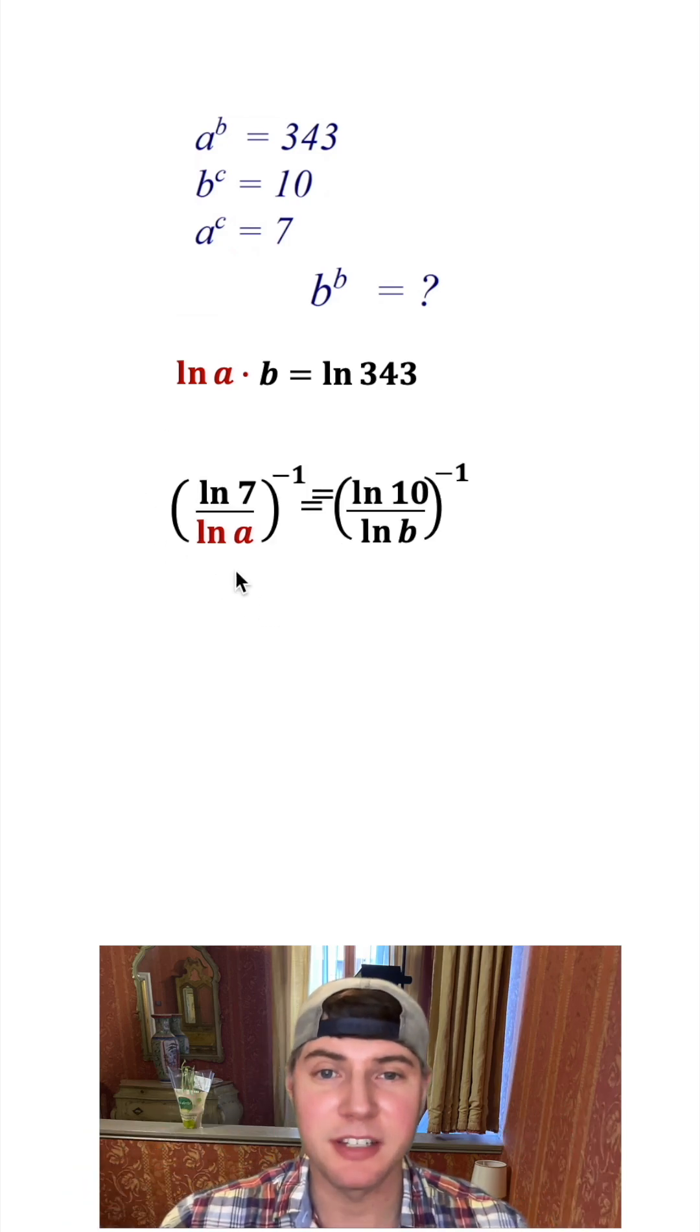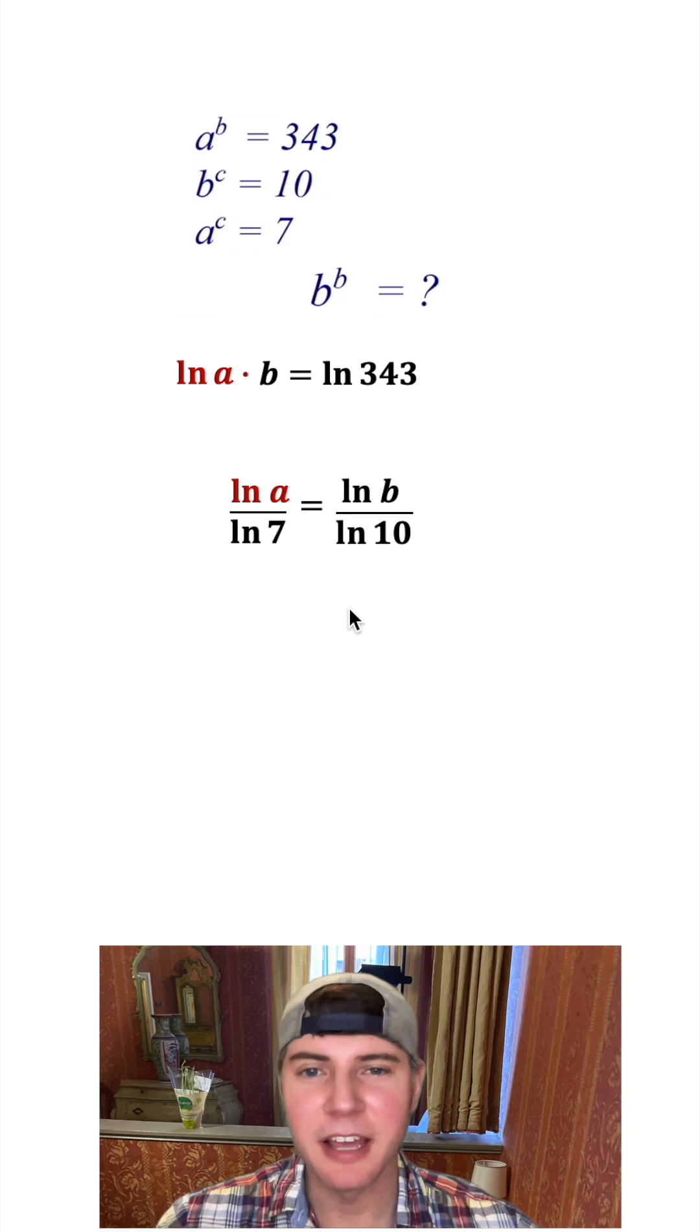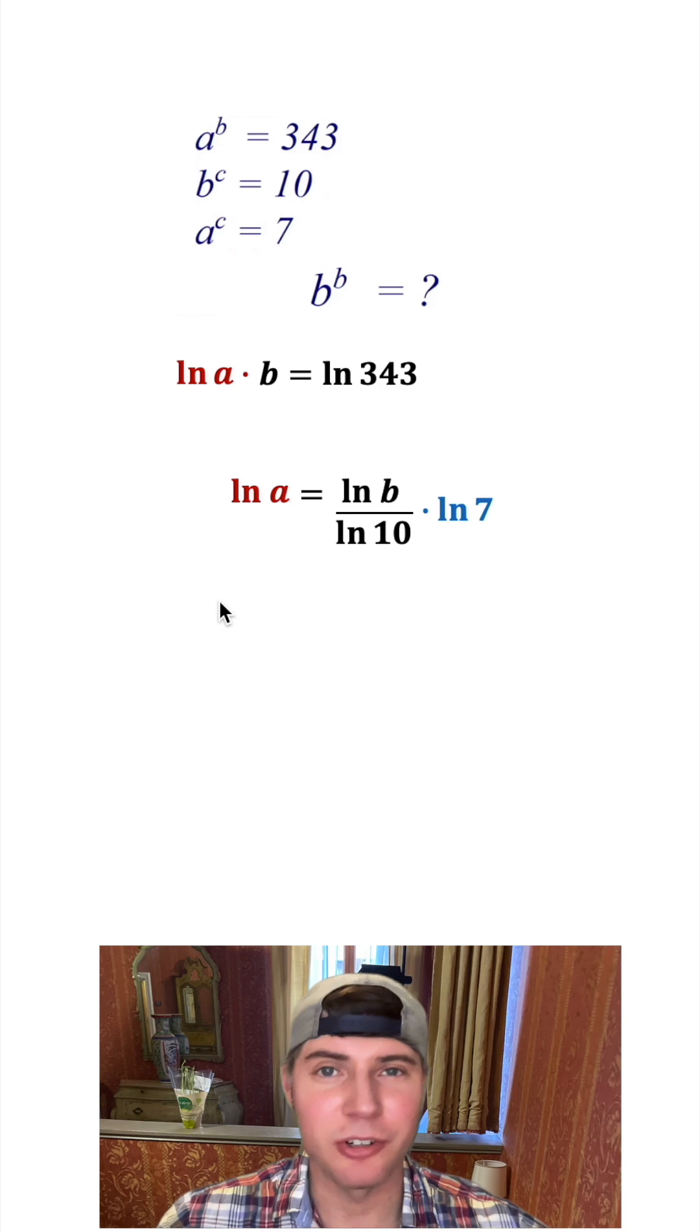So first I want to flip them over. So I'm going to do both sides to the negative one exponent. So we're going to take the reciprocal of this, and we're going to take the reciprocal of this. Now let's smush everything together and multiply both sides by natural log of 7. On the left-hand side, these cancel, so I'm left with just natural log of a. And on the right-hand side, let's just switch these two.